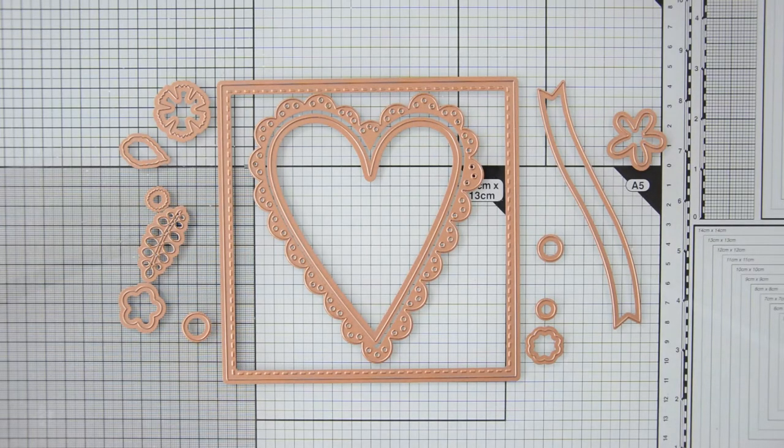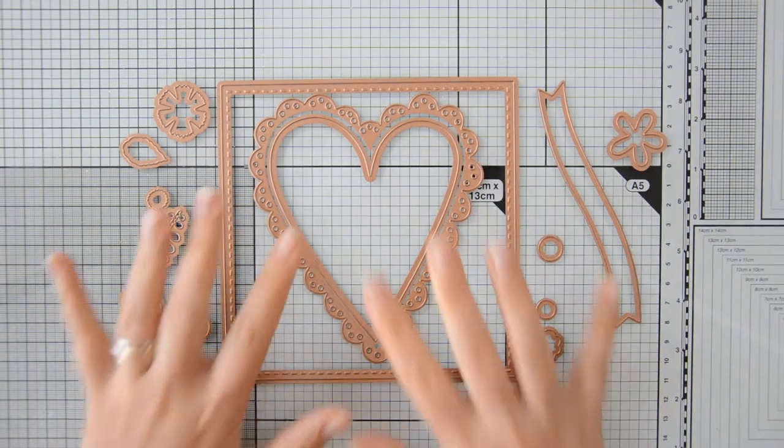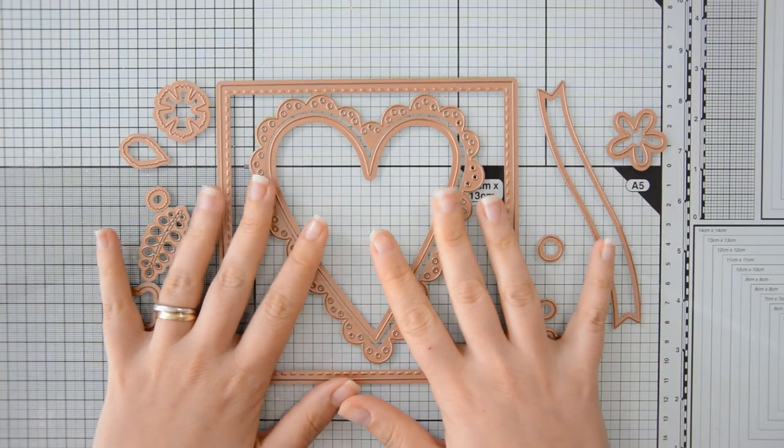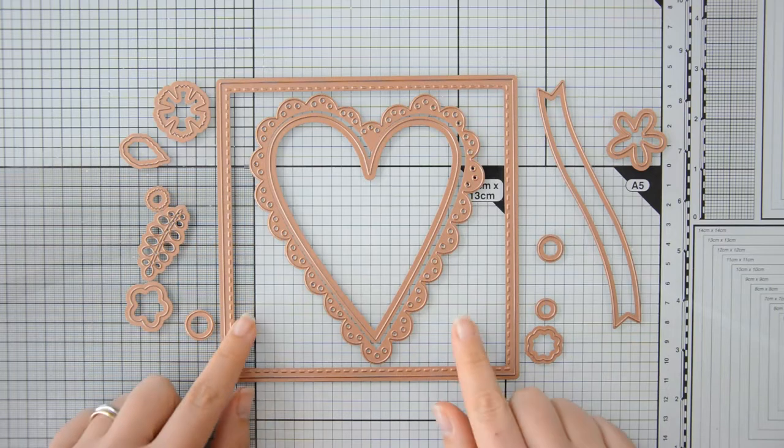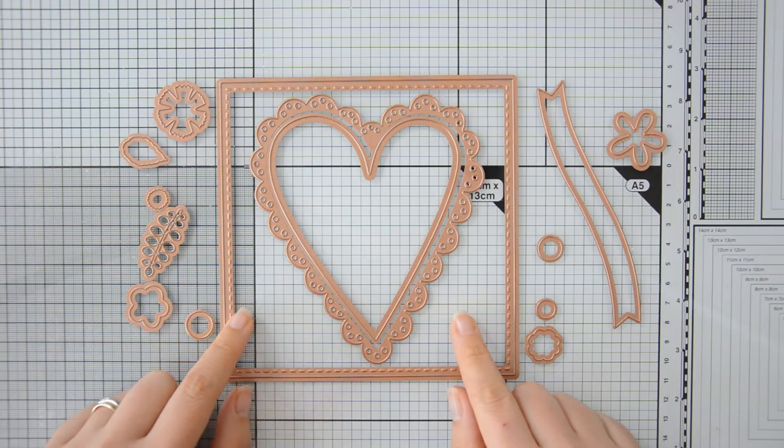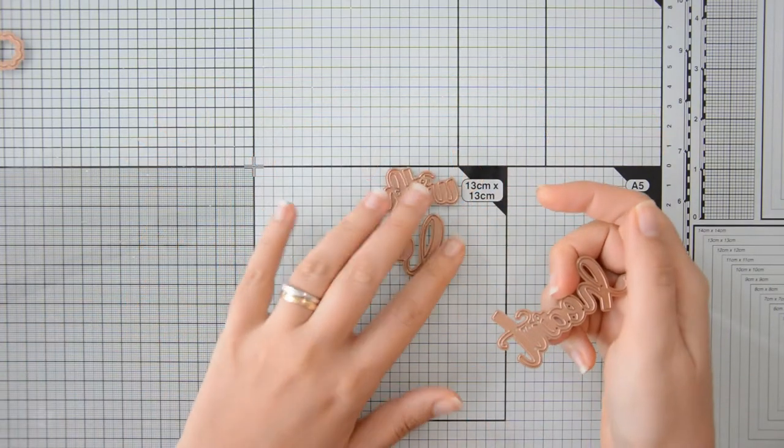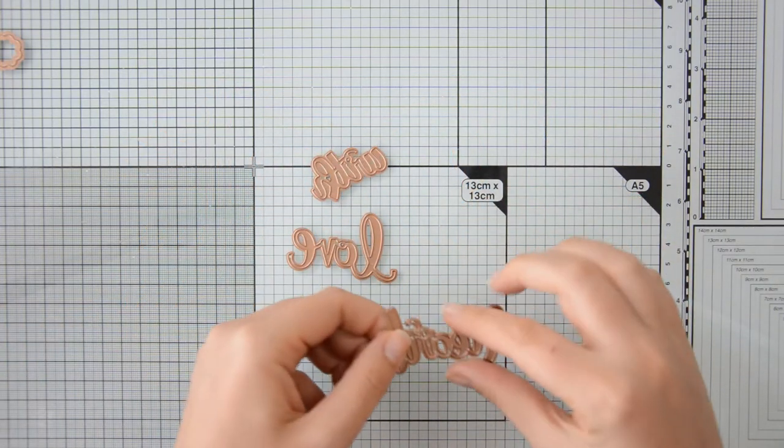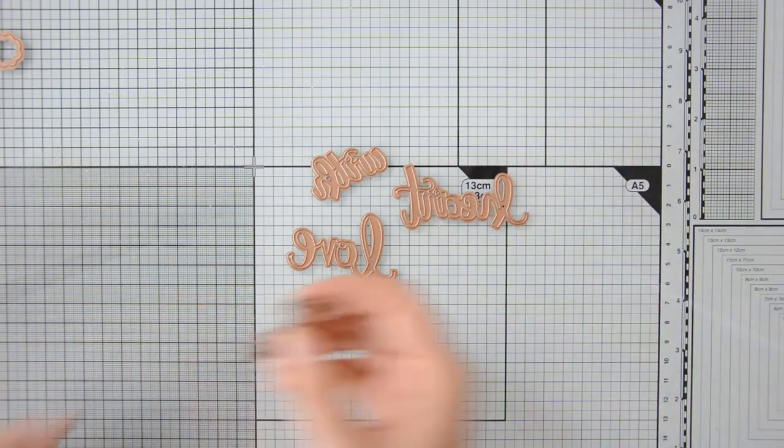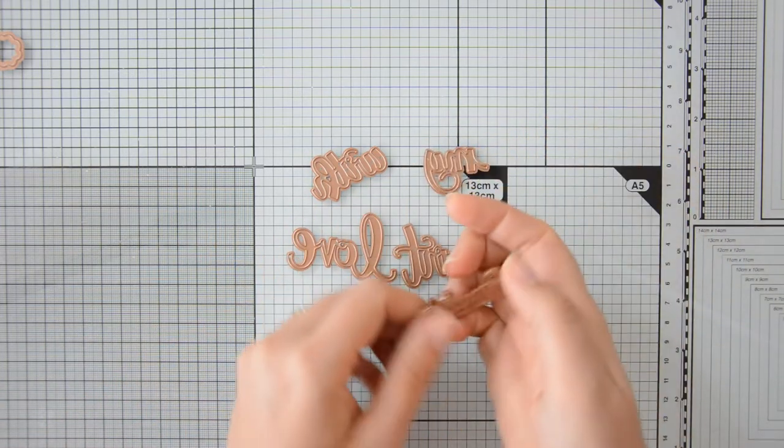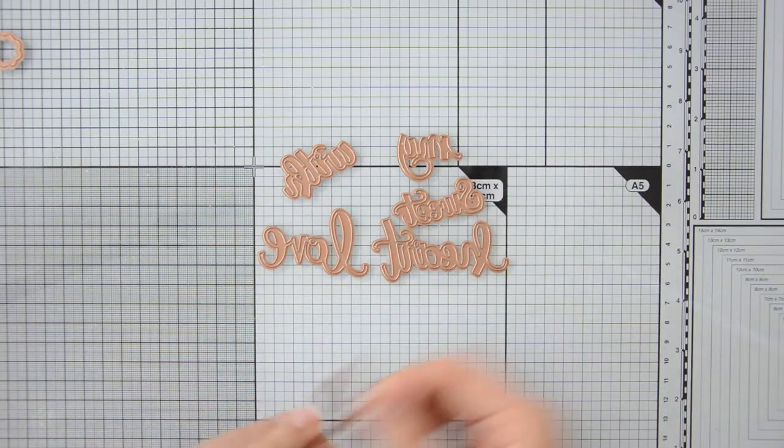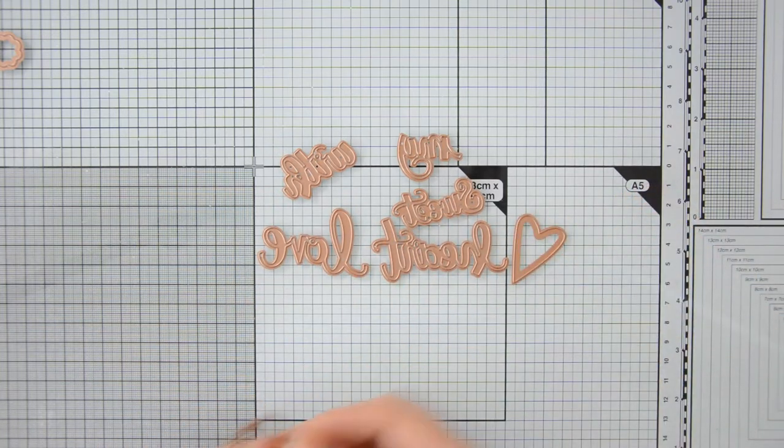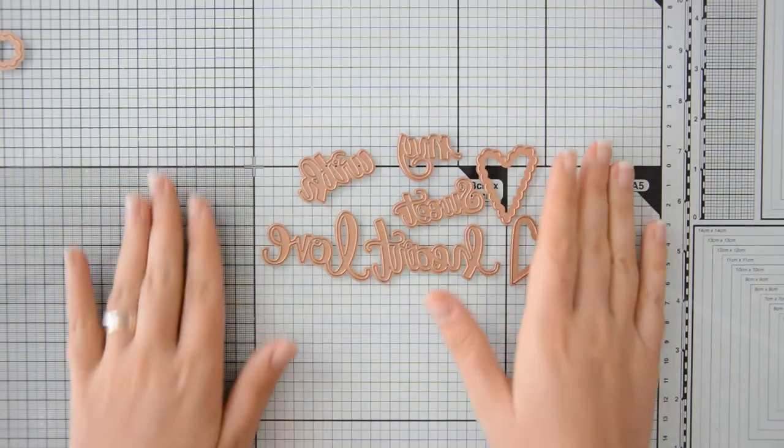For today's project I will be using dies from the Spellbinders Tammy Tatterow collection. This one right here is from the So Sweet Valentine collection and I will use it to build the elements for my card. And for my sentiments I will use some of the dies in the So Sweet Sentiments. This die set has several word dies that you can combine to create different sentiments and also comes with two heart dies.